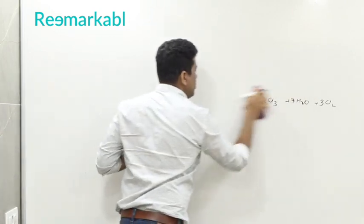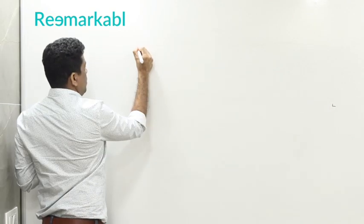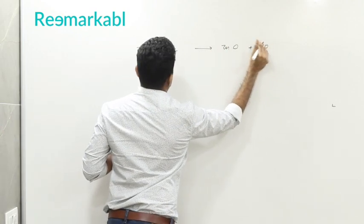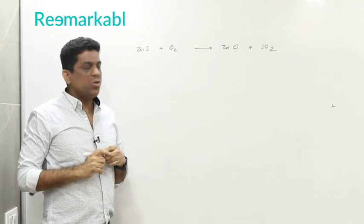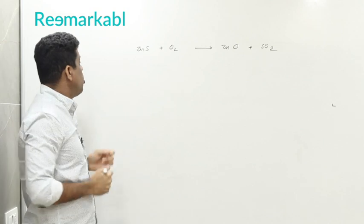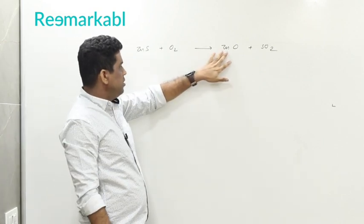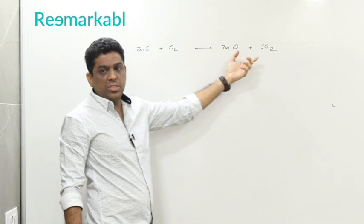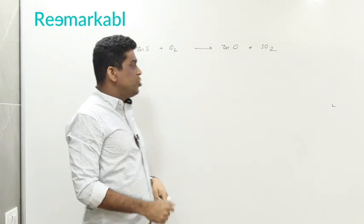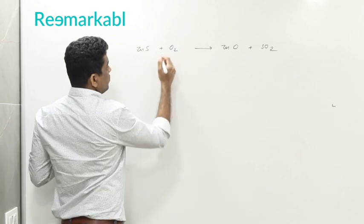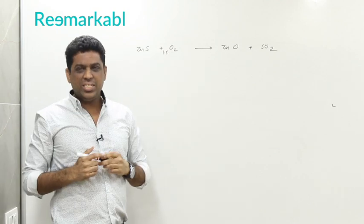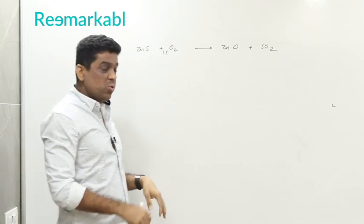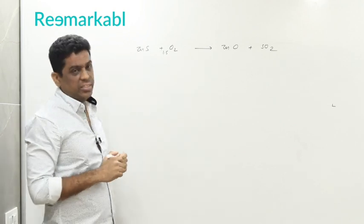Sometimes a special situation arises. For example, oxidation of zinc sulfide: ZnS + O₂ → ZnO + SO₂. Zinc is already balanced, sulfur is already balanced. The problem is oxygen: two atoms on the left and three on the right. If I write 1.5 for O₂, it is balanced — 1.5 times 2 equals 3 — but the rule says you cannot keep fractions.